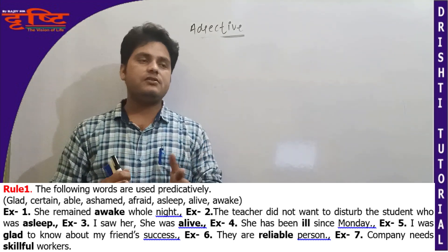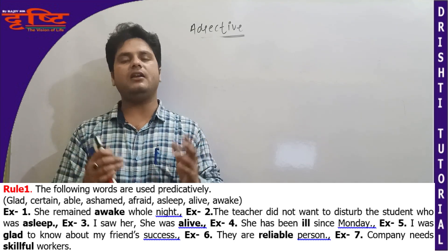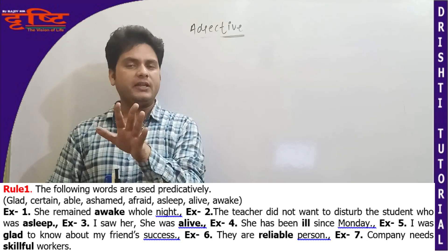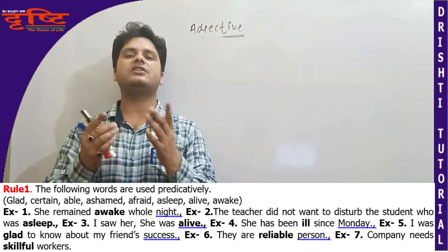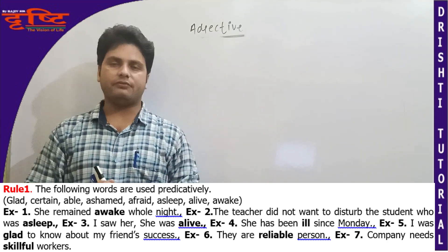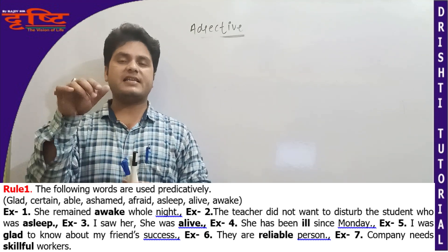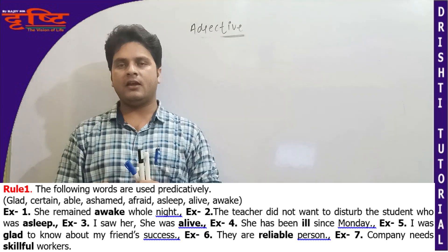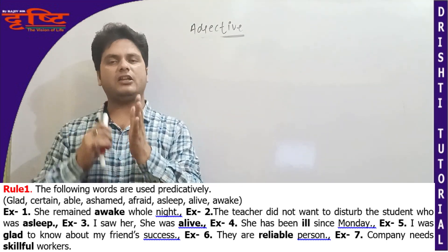Example number one: 'She remained awake whole night' — woh poori raat jagi rahi. Awake shabd ka prayog noun ke modification mein nahi aaya, 'she' ke modification mein aaya — predicatively. Example number two: 'Who was asleep?' — asleep ke baad koi noun nahi hai, to is sentence mein bhi asleep ka prayog predicatively hua hai.